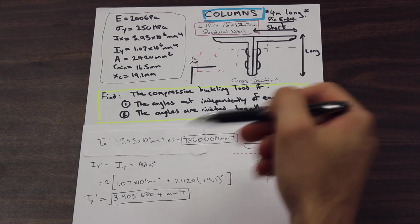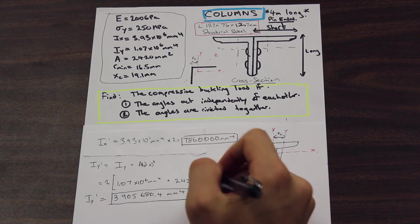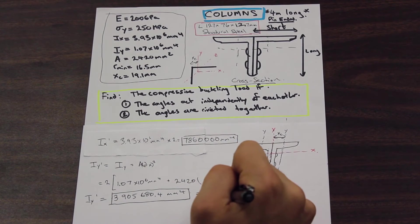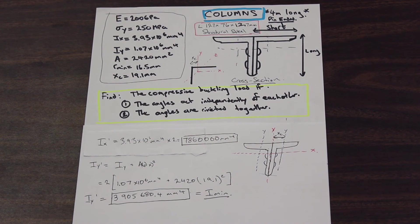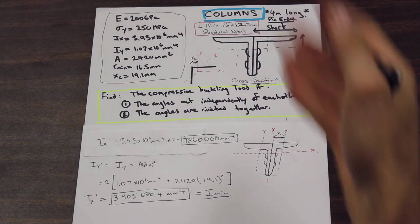Let's go ahead and compare the values, and right off the bat we can see that this one is smaller. So this is our I_minimum, and this is the one that we're going to use to find the Euler's buckling load, the compressive buckling load. And it's exactly the same as the last question.